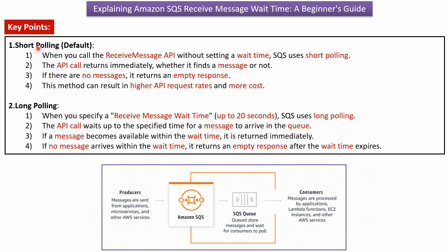The first key point is short polling, which is the default. When you call the receive message API without setting a wait time, SQS uses short polling. The API call returns immediately whether it finds a message or not. If there are no messages, it returns an empty response. This method can result in higher API request rates and more cost.